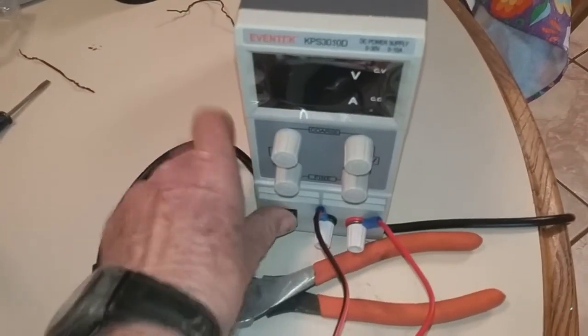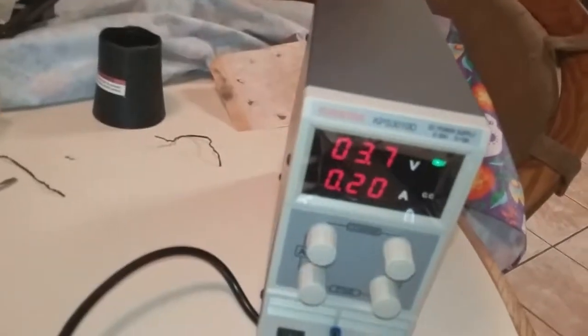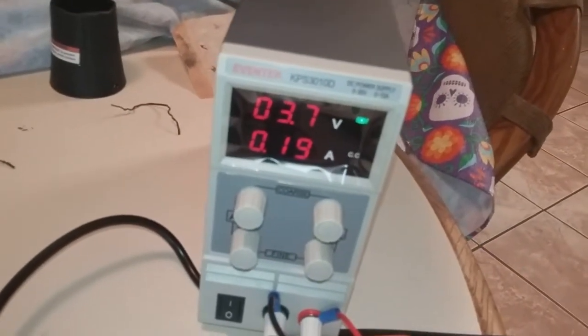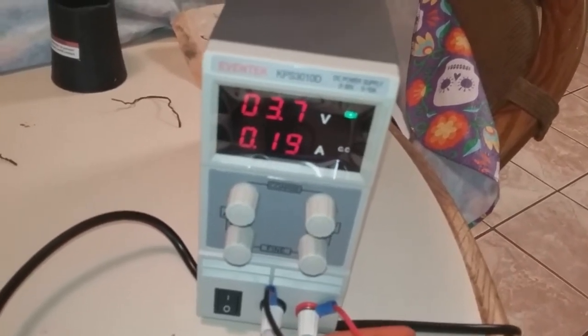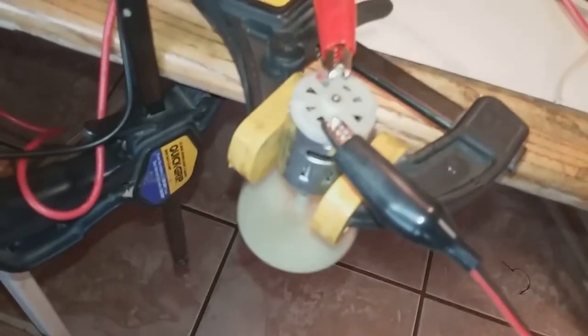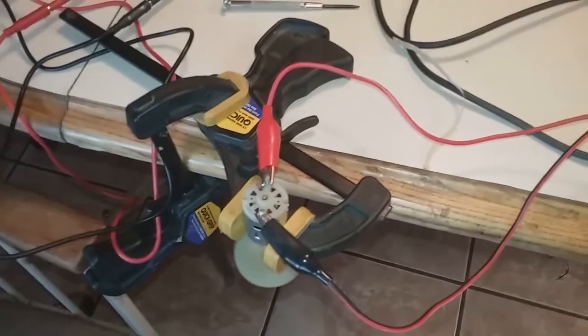So I'm going to turn it on now just to show you that it works, using my right hand. I just turned it on, and you can see that the propellers are definitely turning. I've got it set on 3.7 volts and it's drawing 0.19 amps. But the motor is working with a DC voltage source.